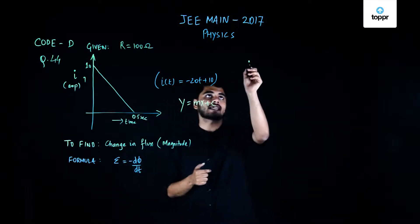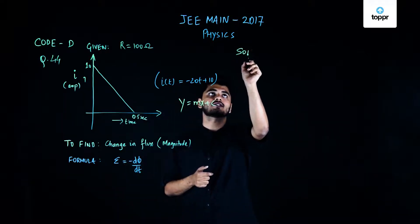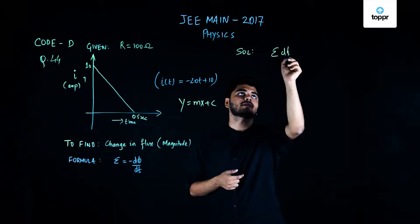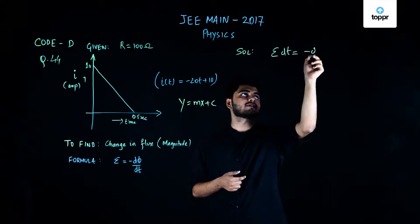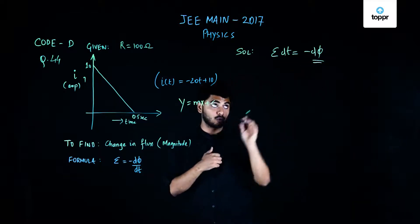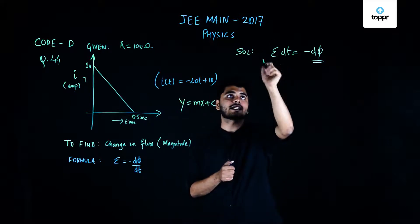Now using this formula I can find out—I'll write my solution for this. Using this formula I can find out that e dt is nothing but equals to minus dφ. So if I want to find the change in flux and the magnitude in this particular case I just need to integrate this.